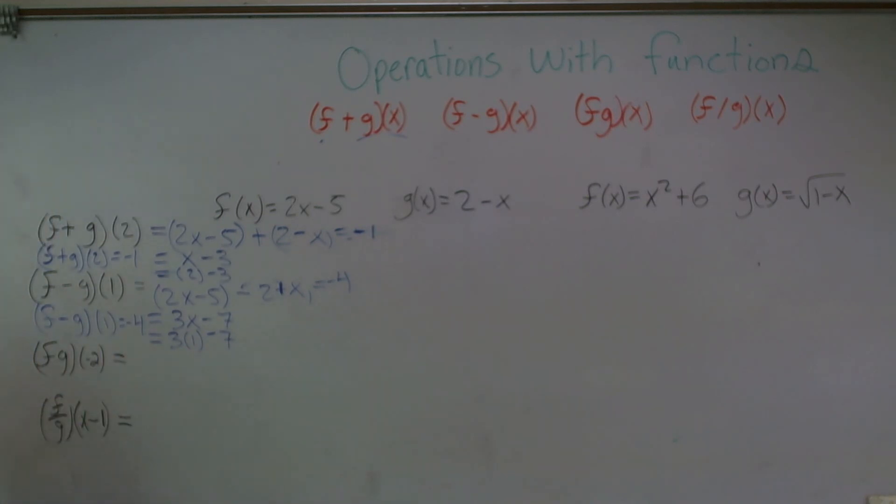All right, multiplication. Again, we have a binomial times a binomial. So I'll have 2x minus 5 times 2 minus x. Multiply the first two terms, I get 4x. Multiply the outer terms, 2x times negative x gives me a negative 2x squared. Multiply my inner terms, negative 5 times 2 gives me a negative 10. And then for my last terms, a negative 5 times negative x gives me a positive 5x. Now, I write my highest degree first, so I'm going to move that to the outside. I combine my like terms, which gives me 9x. So I'm left with negative 2x squared plus 9x minus 10.